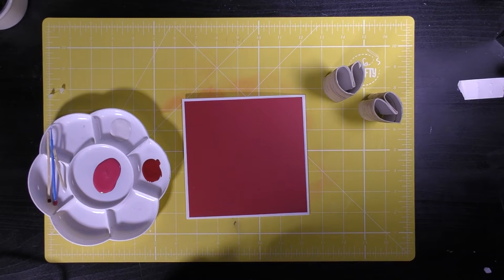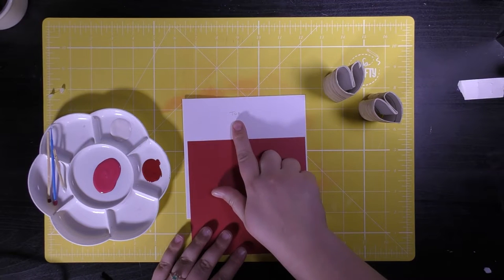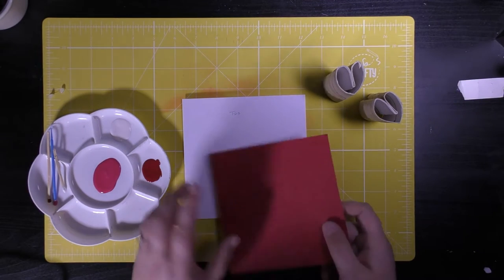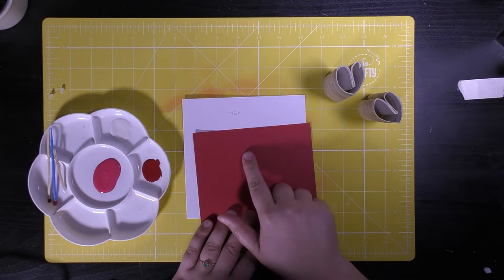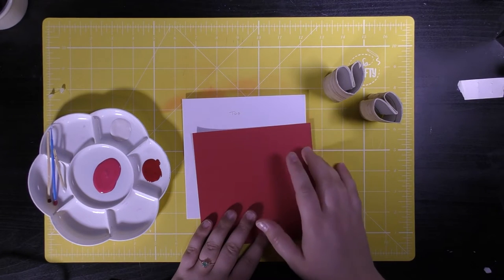I've marked the top of my card blank and on the back of my piece of red paper I've gently written with a pencil where the top is because I'm going to do a directional print with my heart stamps.